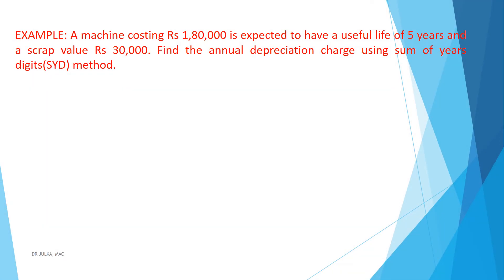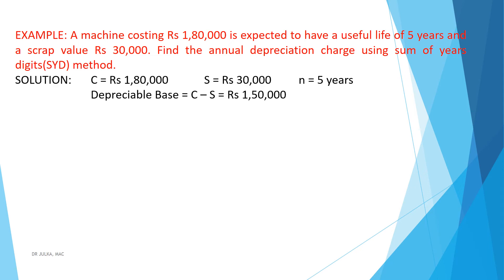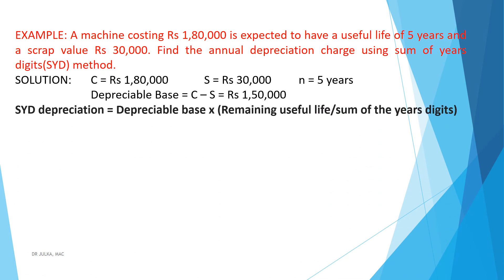One example on the Sum of Years Digit method: A machine costing Rs 1,80,000 is expected to have a useful life of 5 years and a scrap value of Rs 30,000. Find the annual depreciation charge using the Sum of Years Digit method. In this example, C equals Rs 1,80,000, S equals 30,000, and N equals 5 years. The depreciable base is C minus S, which equals Rs 1,50,000. Annual depreciation equals depreciable base multiplied by remaining useful life divided by sum of the year digits.